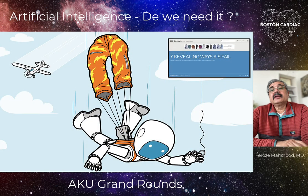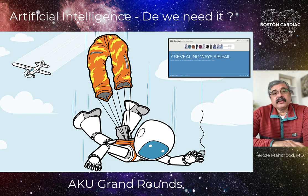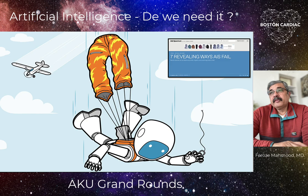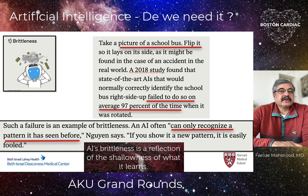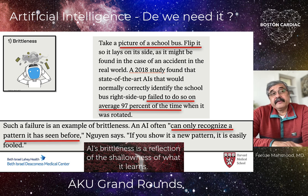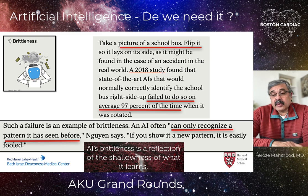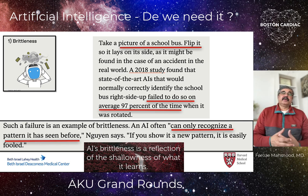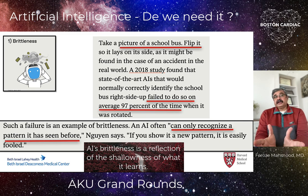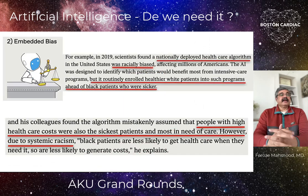A famous IEEE Spectrum article outlines seven classic ways AI has miserably failed. First is brittleness: take a picture of a school bus and flip it — most of the time AI will fail to recognize the flipped bus because it can only recognize a pattern it has seen before. If it has not seen that pattern, it will be unable to recognize it. AI's brittleness is a reflection of the shallowness of what it learns — it is not any better than the data put into it.